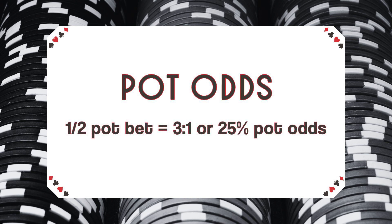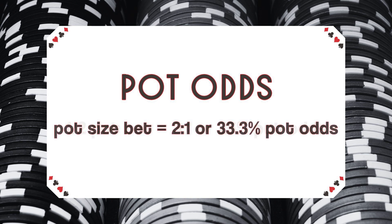If you're facing a half-pot bet, you're being given three-to-one odds, which is one divided by four, or 25% pot odds. When facing a pot-sized bet, you're being given two-to-one odds, which is 33.3% pot odds — one divided by three.